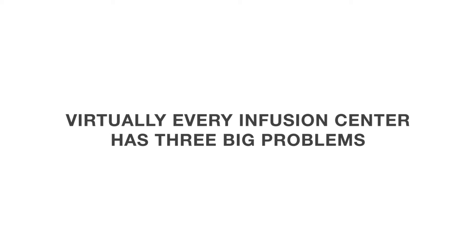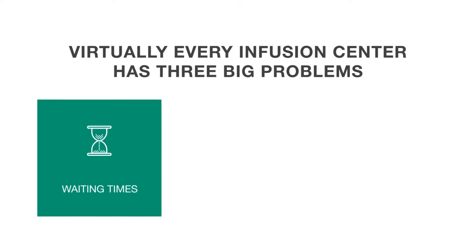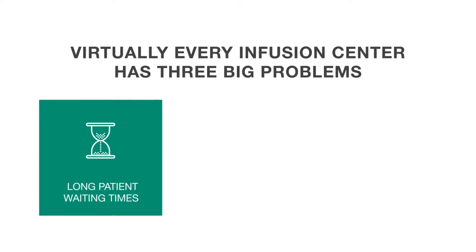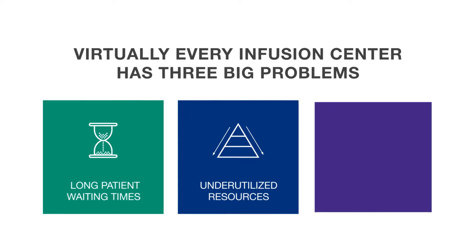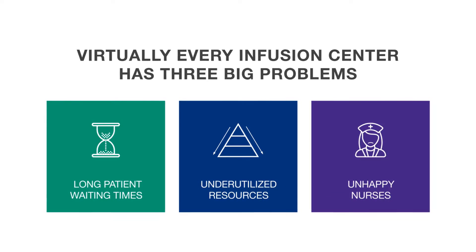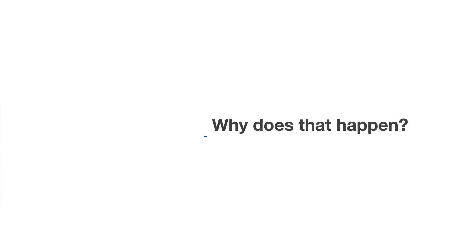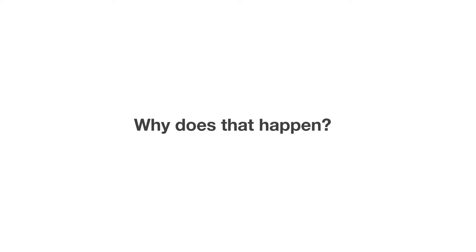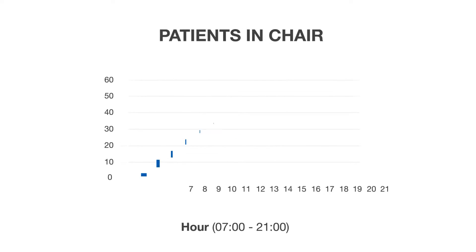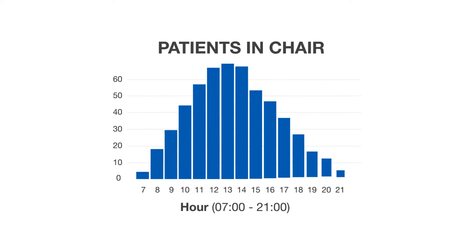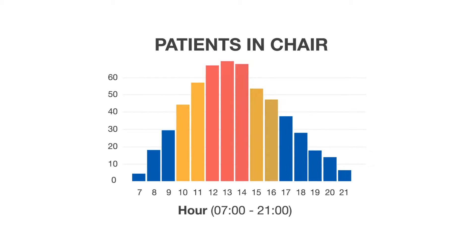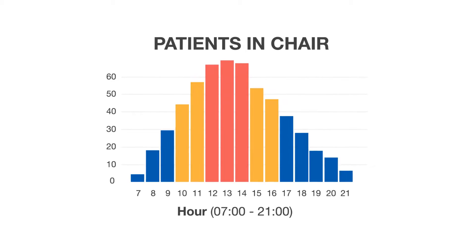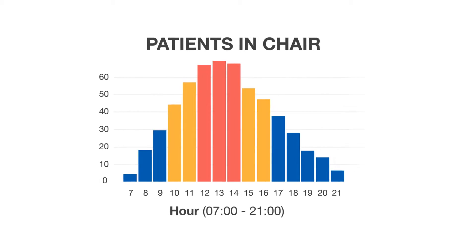Virtually every infusion center has three big problems: long patient waiting times, underutilized resources, and suboptimal nurse schedules. Why does that happen? Because almost every day starts with slow mornings and ends with slow evenings, with a chaotic period of time in the middle of the day.